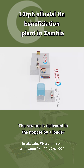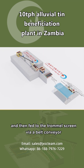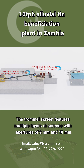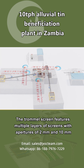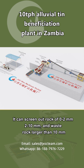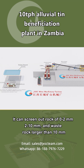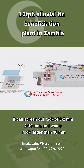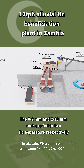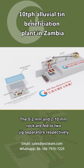The raw ore is delivered to the hopper by a loader and then fed to the trommel screen via a belt conveyor. The trommel screen features multiple layers of screens with apertures of 2 mm and 10 mm. It can screen out rock of 0 to 2 mm, 2 to 10 mm, and waste rock larger than 10 mm. The 0 to 2 mm and 2 to 10 mm rock are fed to two jig separators respectively.